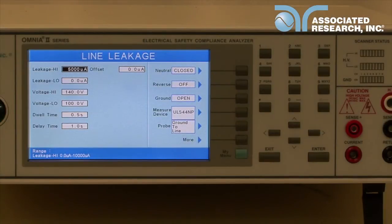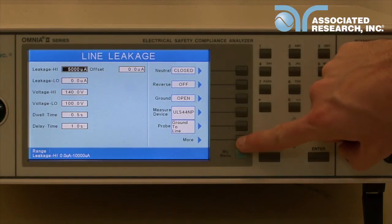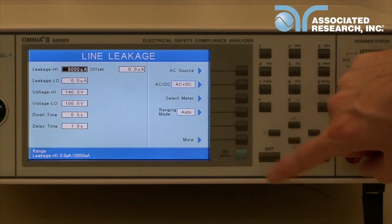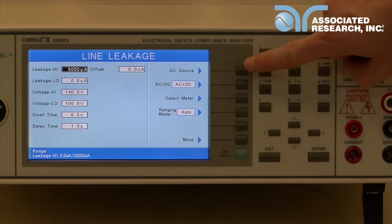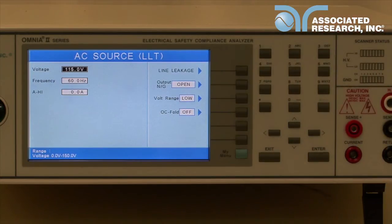The internal source can be set through the line leakage or run test parameter menu. To set the source, press the more soft key until you see the AC source soft key selection. Press the AC source soft key and this will take you to the AC source parameter menu.